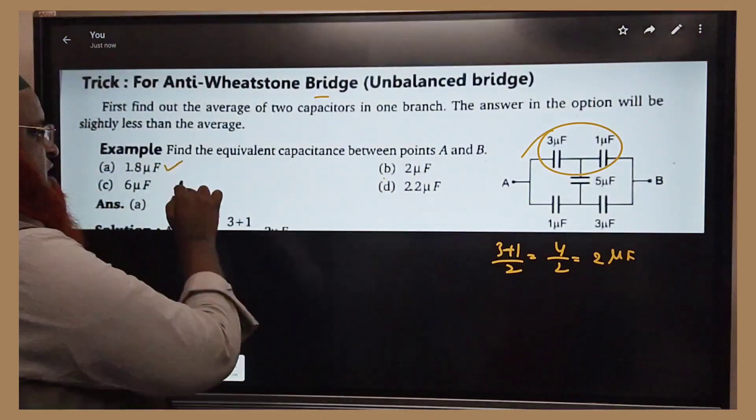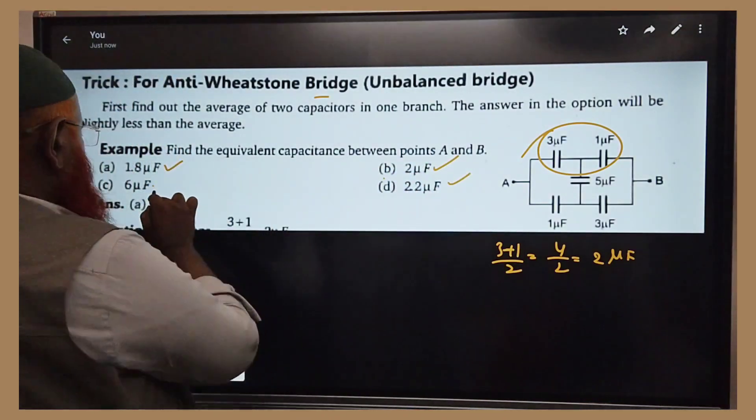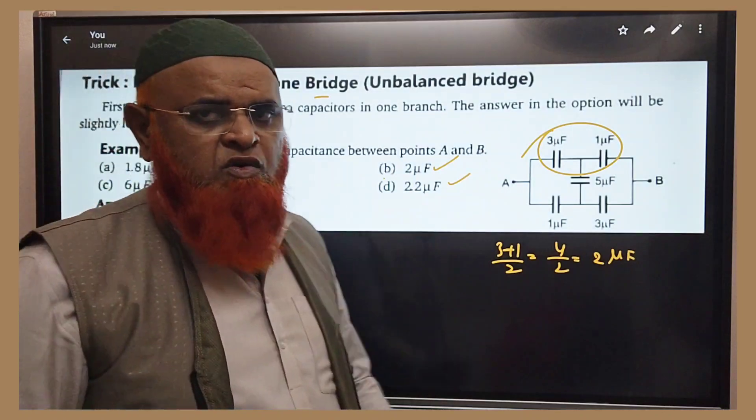If you see the option, it is 1.8, 2, 2.2 and 6 microfarads. But how to select the correct option?